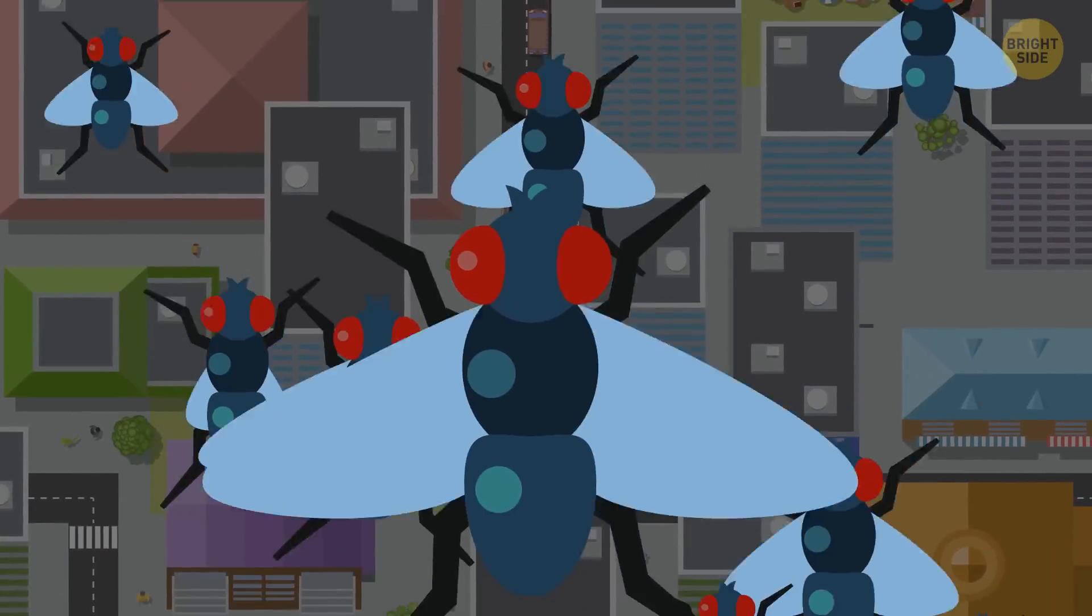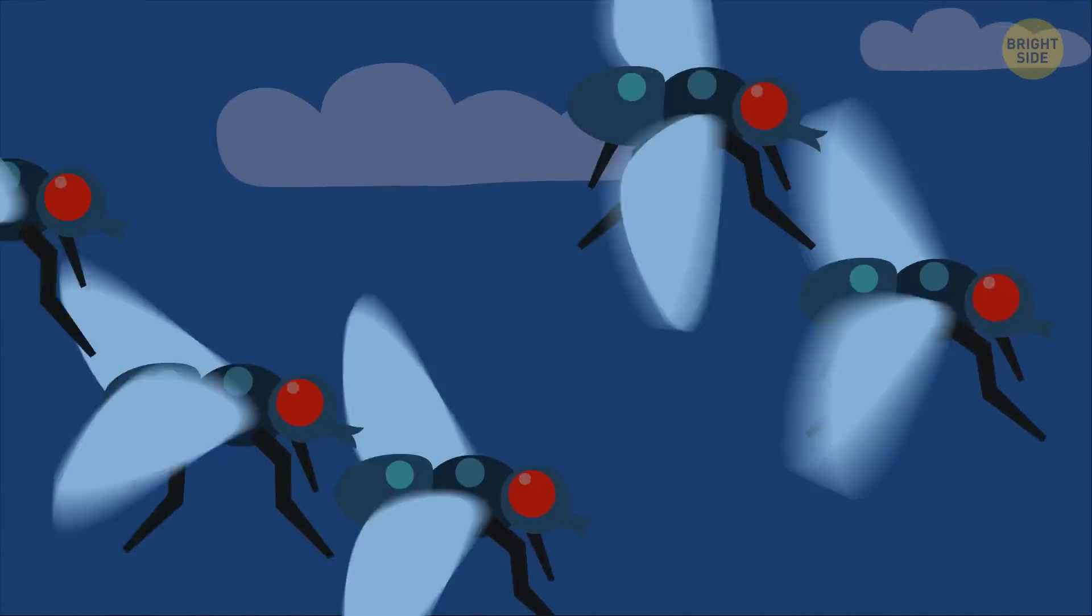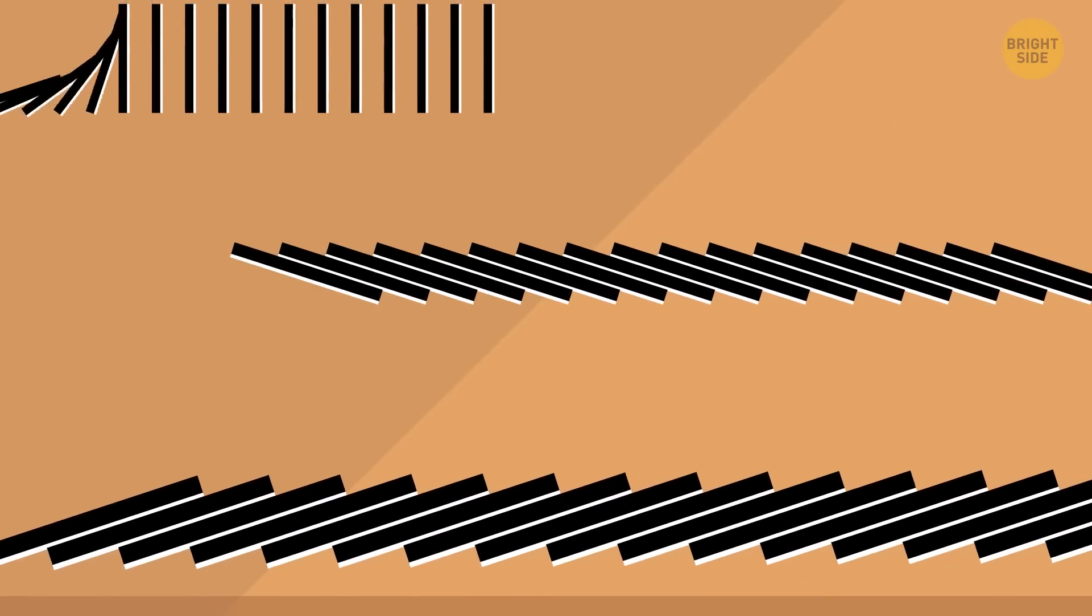Without frogs, the population of other insects, like flies, would begin to grow. They would reproduce uncontrollably. And then, like falling dominoes, other problems will follow.